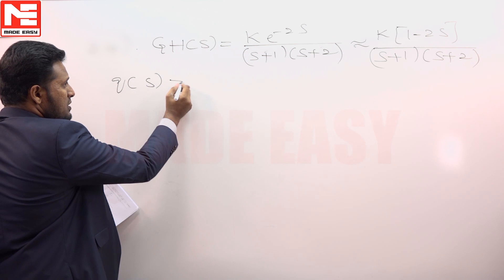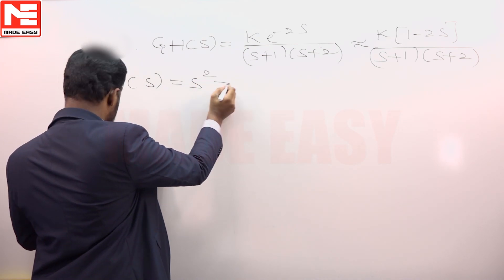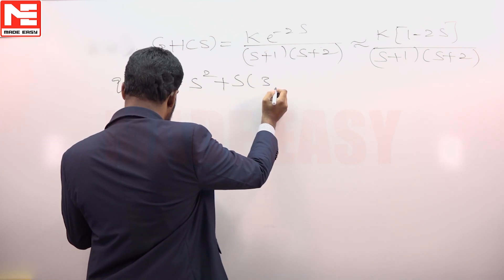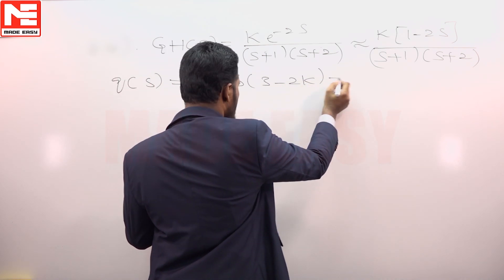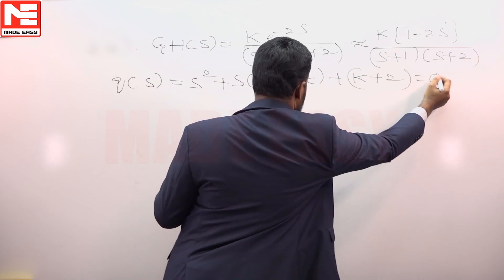Characteristic equation of the system can be obtained as s square plus 3 minus 2K s plus K plus 2 is equal to 0.